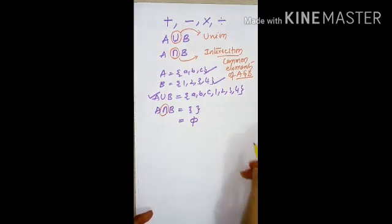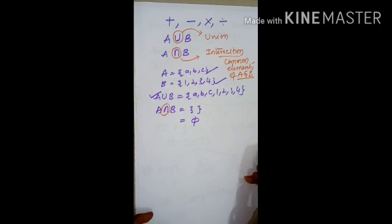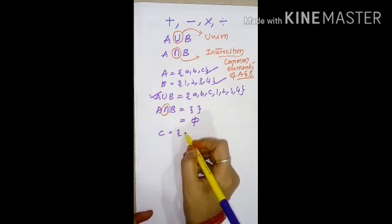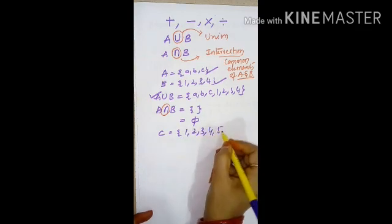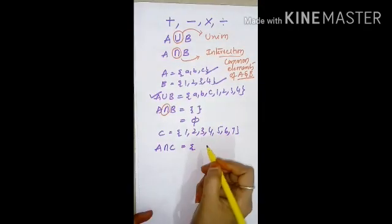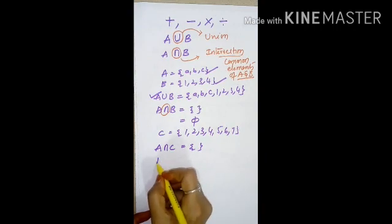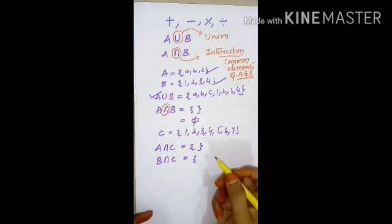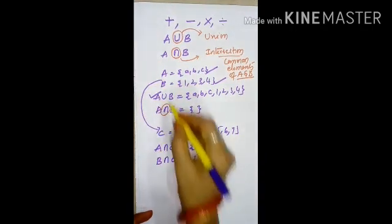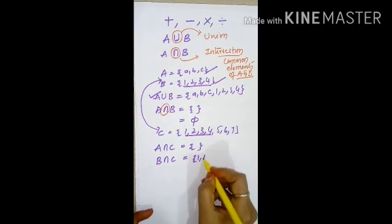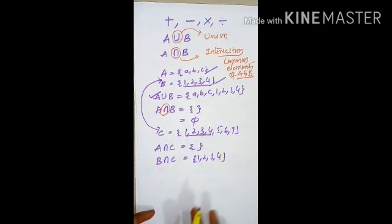For example, if you consider another set C as {1, 2, 3, 4, 5, 6, 7}, then A intersection C equals empty. Now consider intersection of B and C. What are the common elements? 1, 2, 3, 4. This is the intersection definition.